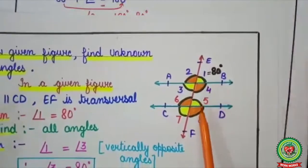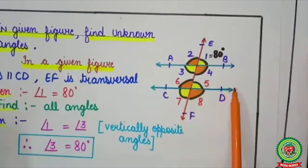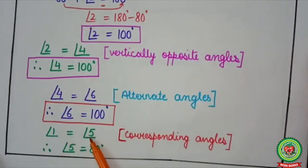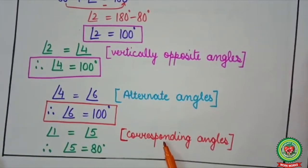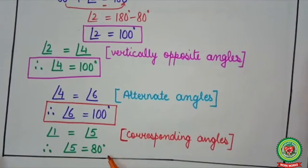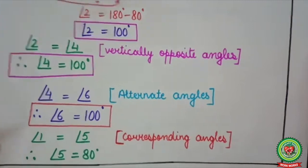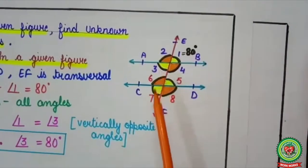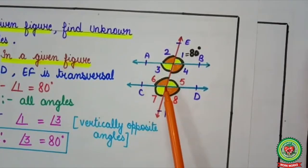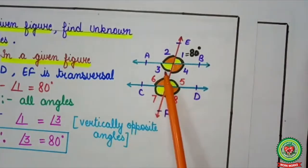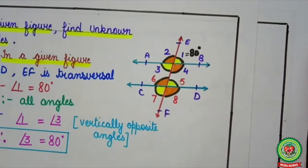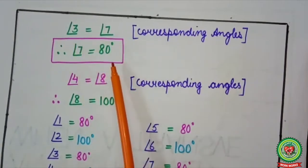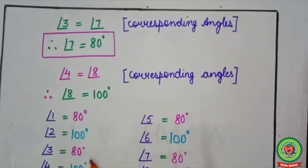Angle 1 and angle 5 are forming an F shape, so these two are corresponding angles. Therefore, angle 1 equals angle 5. If angle 1 is 80 degrees, therefore angle 5 is also equal to 80 degrees. Next, angle 3 and angle 7 are also forming an F shape — both are below the lines — so angle 3 and angle 7 are corresponding angles. Therefore, angle 3 equals angle 7. If angle 3 is 80 degrees, therefore angle 7 also equals 80 degrees.